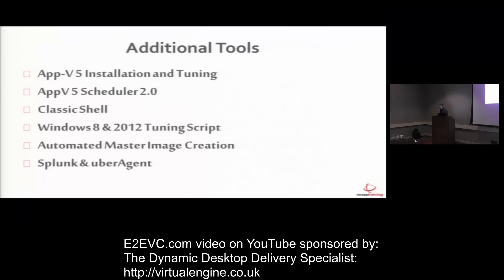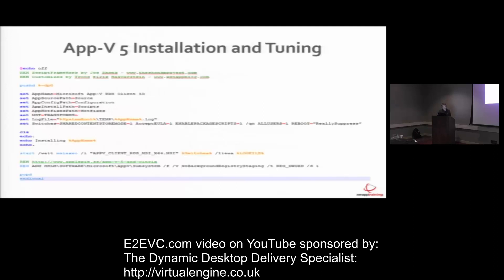Now with the TechNet stuff going away, it's a pain. So, additional tools: App-V5 installation and tuning, the App-V5 scheduler 2.0, Classic Shell, the baseline tuning script from Citrix, the automation master image creation — referring to the reference image that Anton asked about — and then the Splunk and UberAgent. MDT is just using scripts to install, so as long as you can create an unattended installation, you just put it in there.